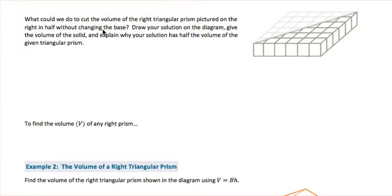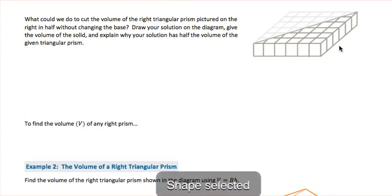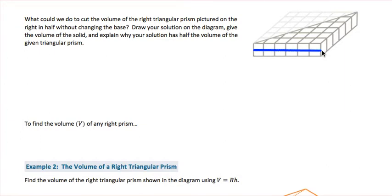Next, we're asked what we could do to cut the volume of the right triangular prism in half, without changing the base. If we cut the cubes in half so they were no longer one unit thick but one half unit thick, we would then have half the volume.